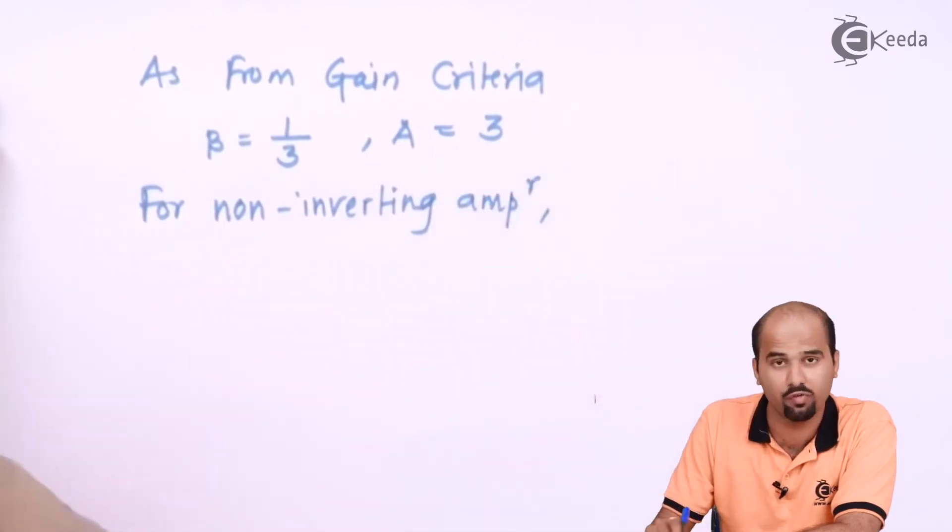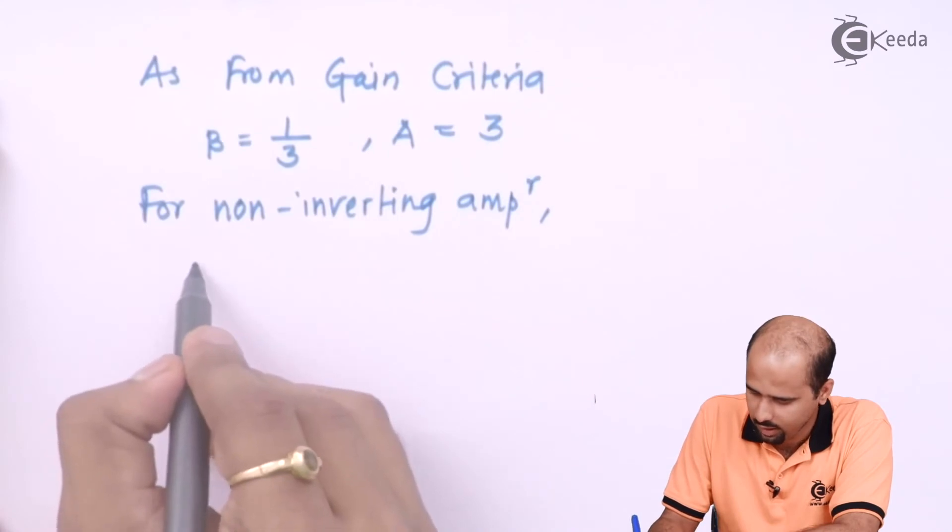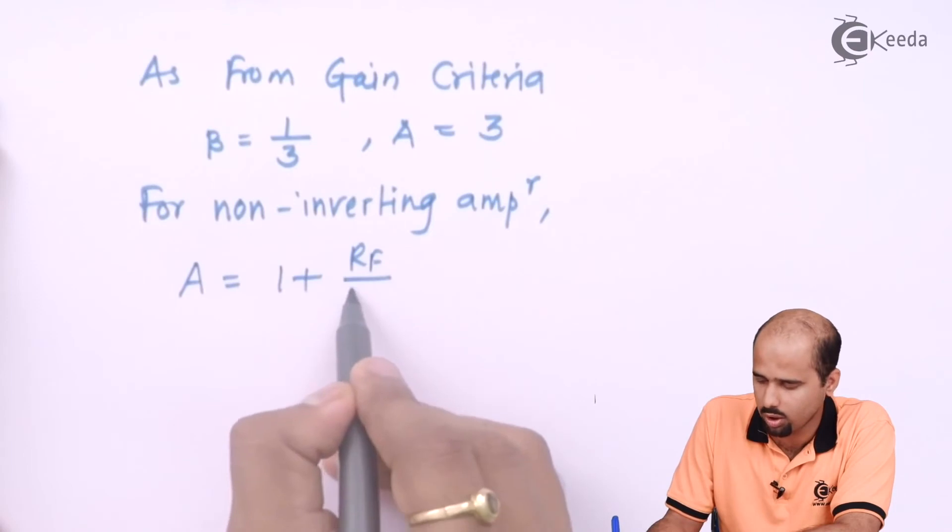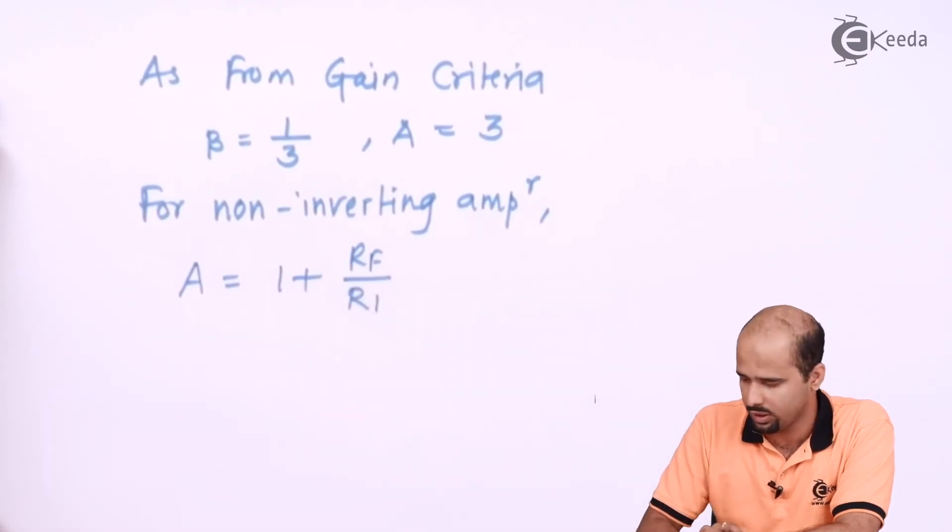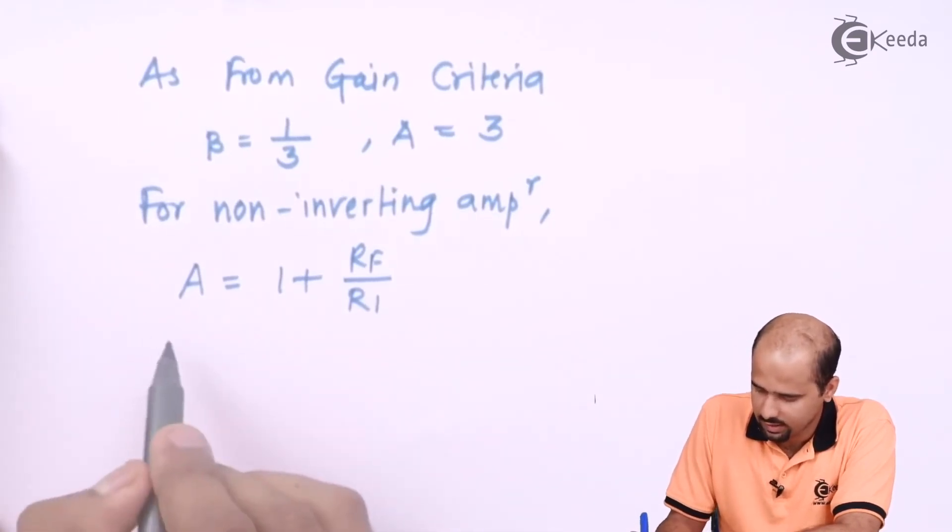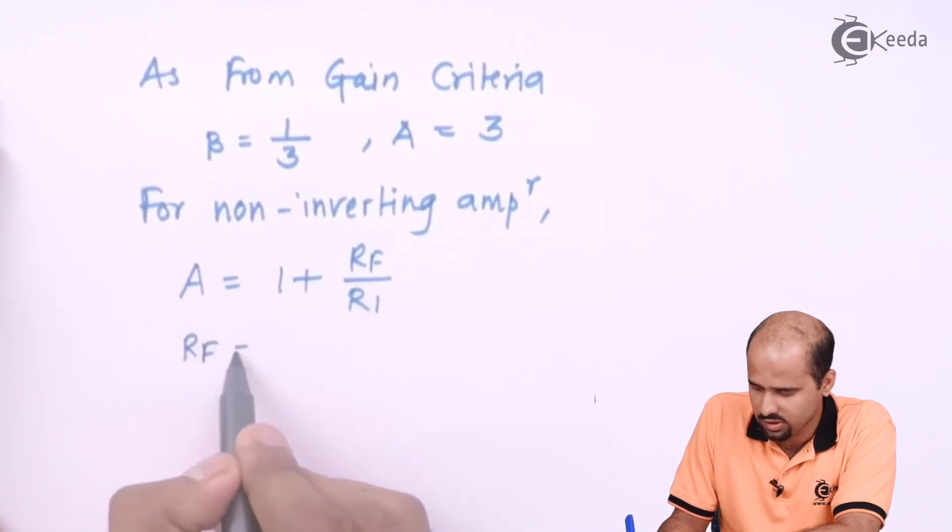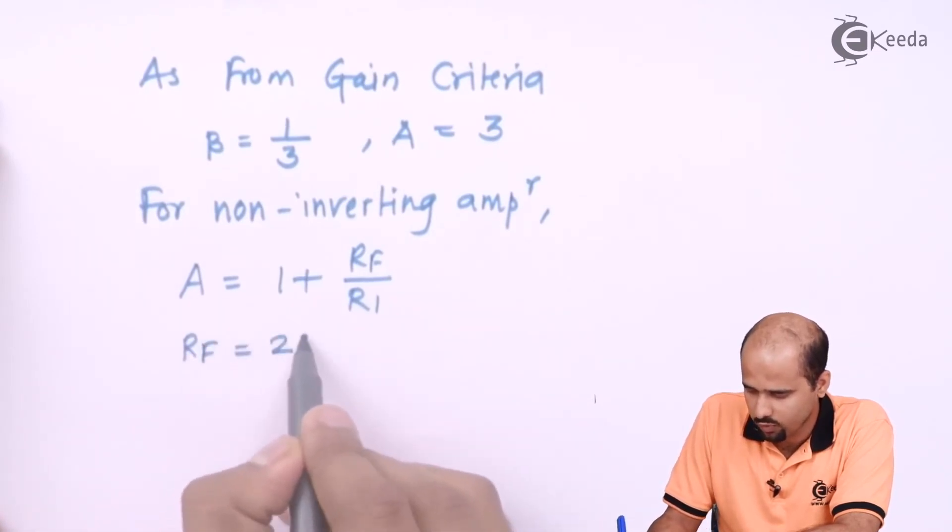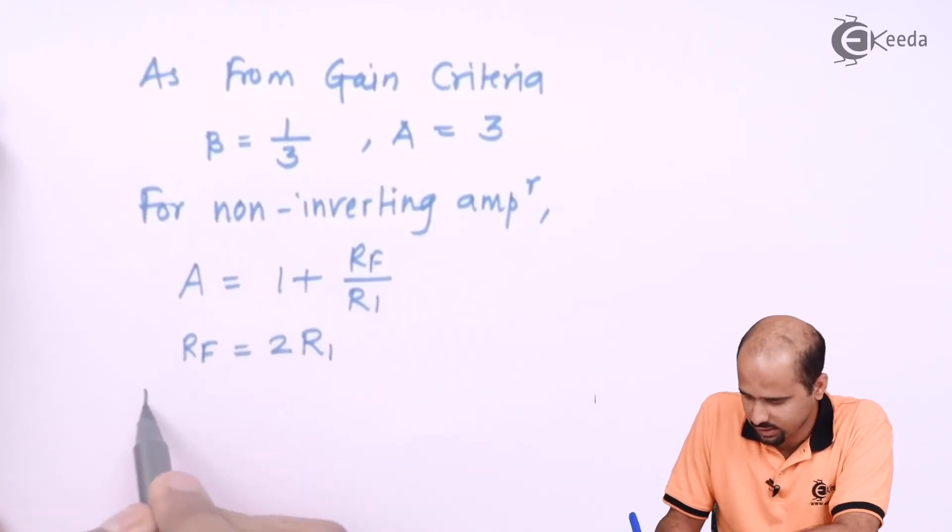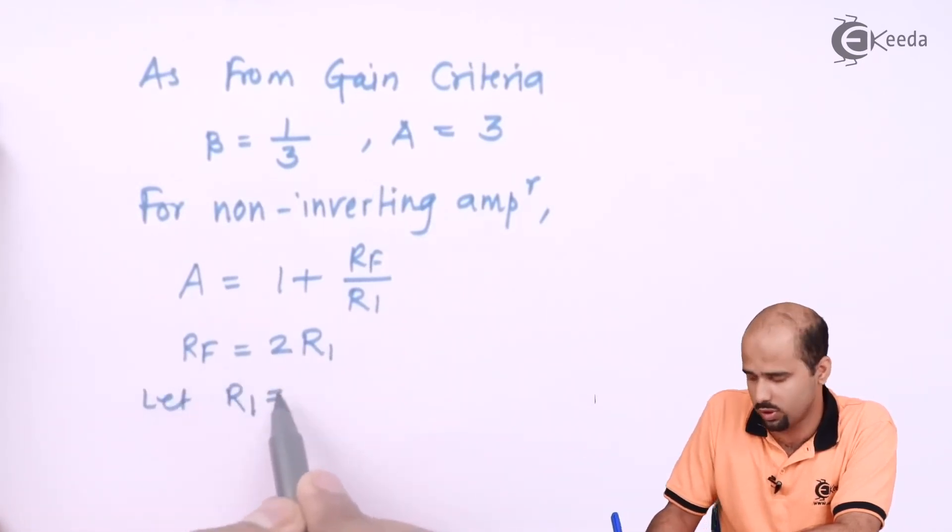For non-inverting amplifier we will be getting A = 1 + RF/R1. Now one value I have to choose of our own, so we will say that A = 3, so automatically RF is equal to twice of R1 that I am getting.